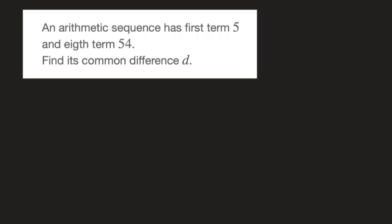First of all, we need to find this arithmetic sequence's common difference d, and we're told that its first term is equal to 5 and its eighth term is equal to 54. What I tend to do is make a note of the information that's given. So that was the first term, u sub 1, which equals 5, and the eighth term, u sub 8, equals 54.